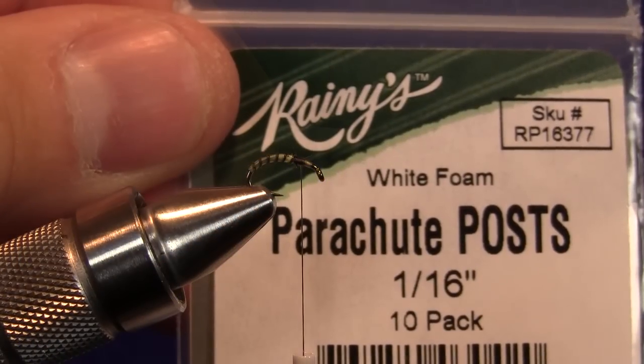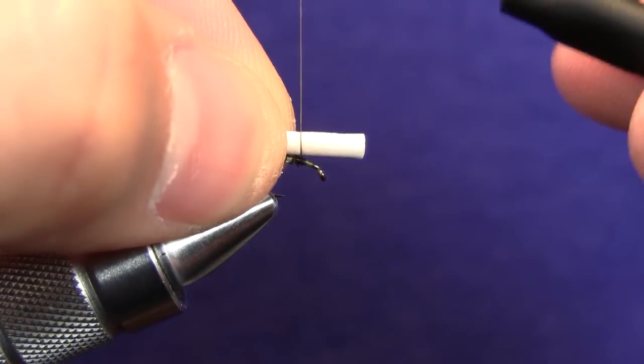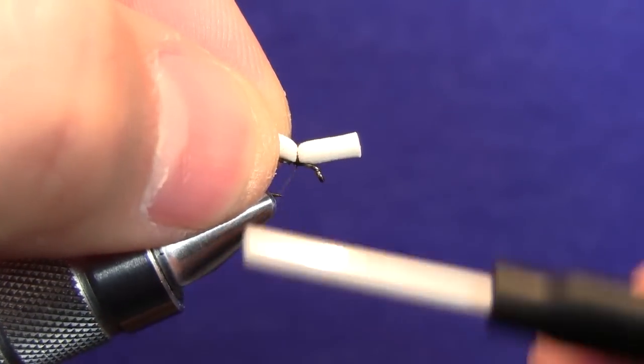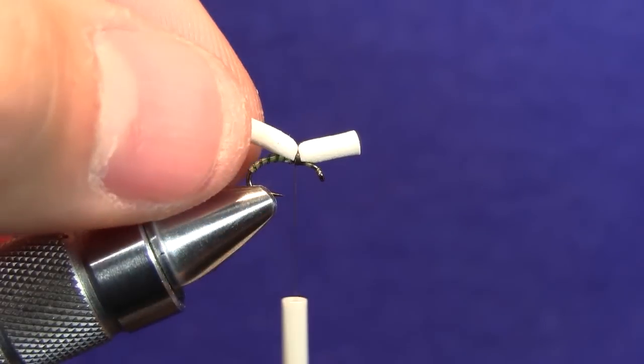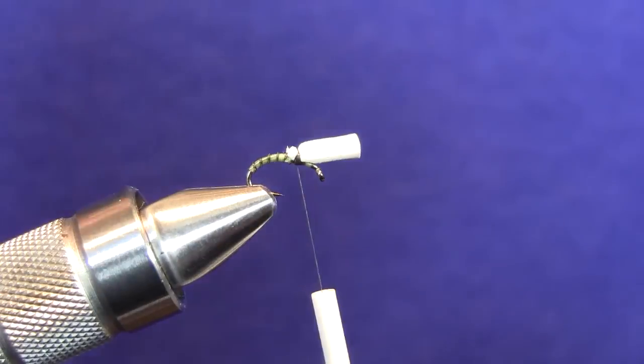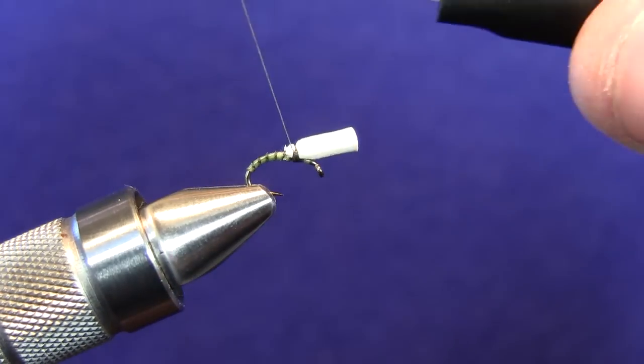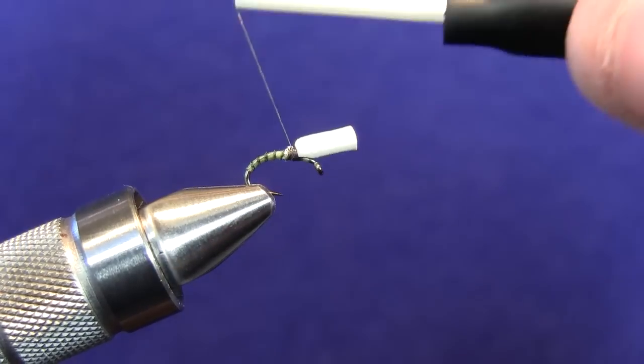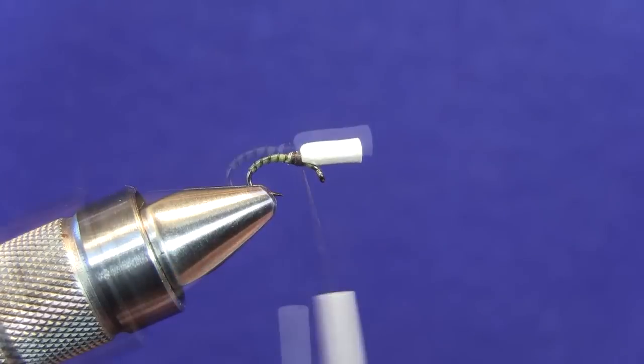At this point we're going to tie in our parachute post, and we're going to hold that directly over the top of the hook shank and bind that down with about six to seven securing wraps. Once we have that taken care of, just take your thumb and your forefinger, put a little tension on that foam and snip it out with the tips of your scissors. What I like to do here is just make a few more wraps over that butt section just to cover it. It makes a nice even thread base to work from.